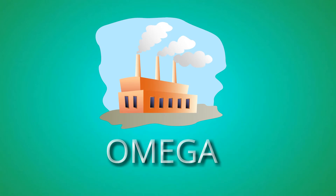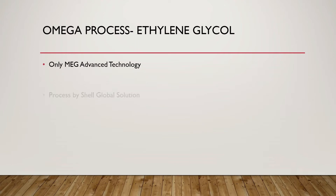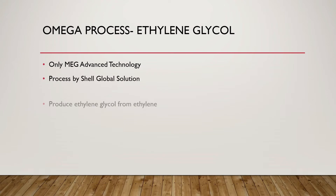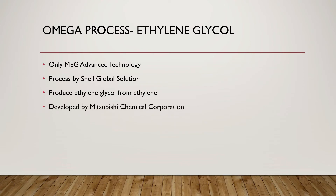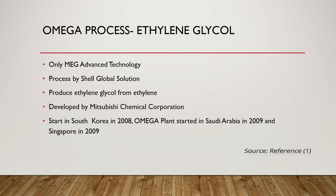In this video we will talk about an Omega process. Omega is also known as Only MEGAdvanced Technology. It is a process by Shell Global Solutions that produces ethylene glycol from ethylene. This process is developed by Mitsubishi Chemical Corporation and was started in South Korea, followed by Saudi Arabia and Singapore.